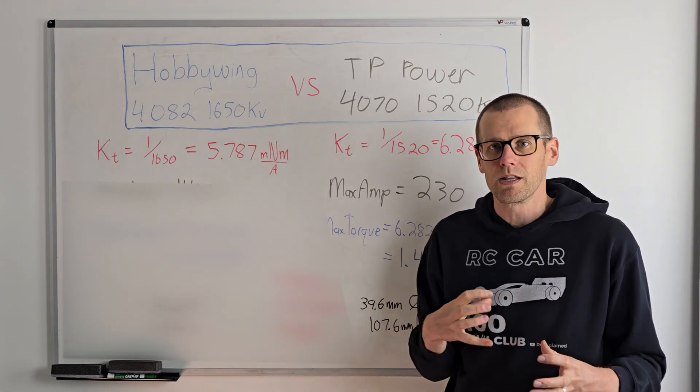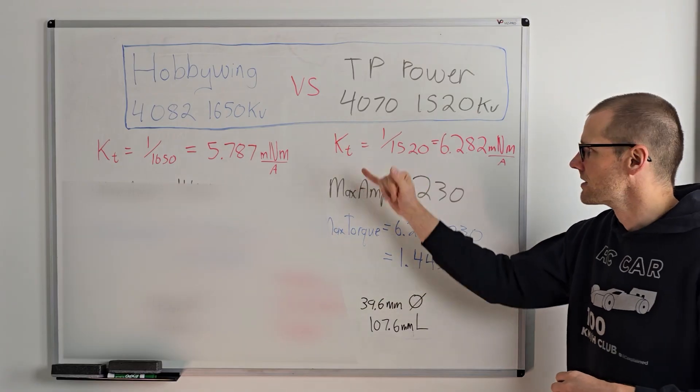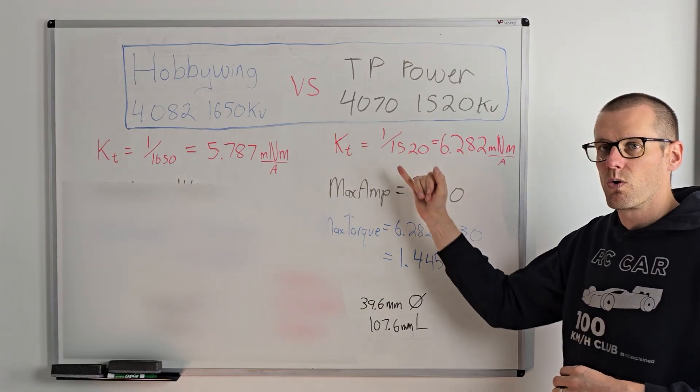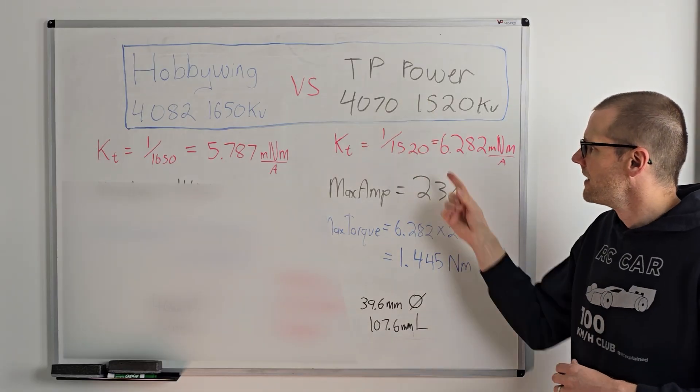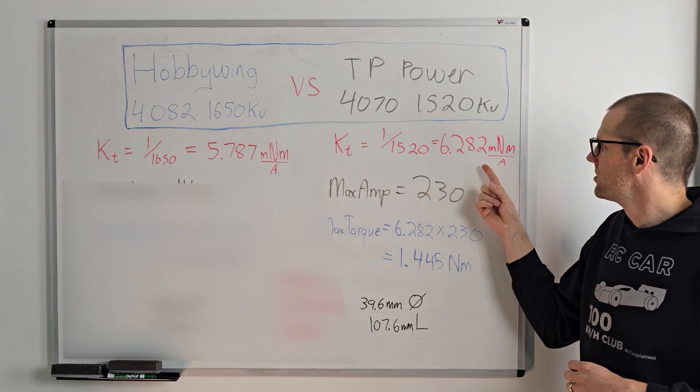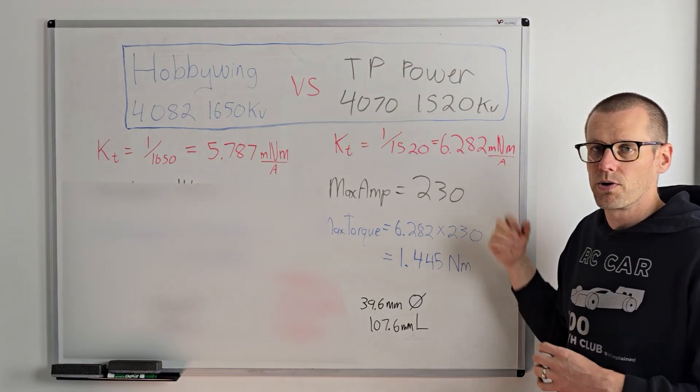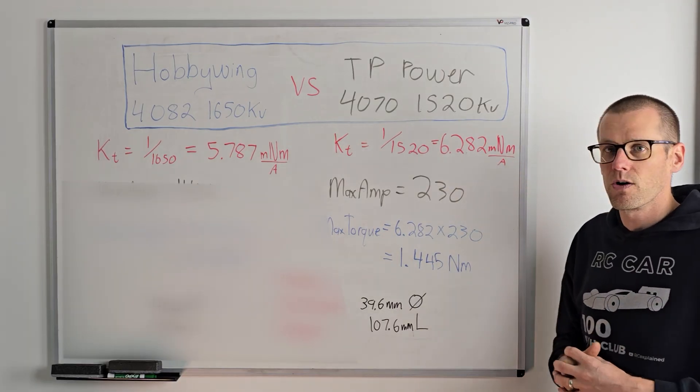We're going to go and flip between millinewton meters and newton meters as we move through this. KT is going to be one divided by 1520 for our TP power. And this is where we get 6.282 millinewton meters per amp for our TP power brushless motor.